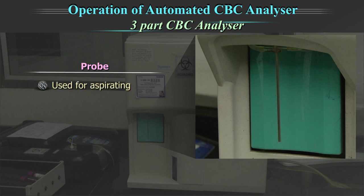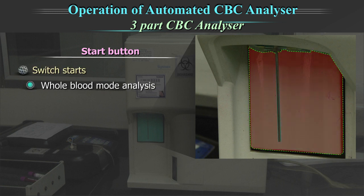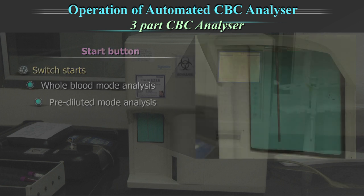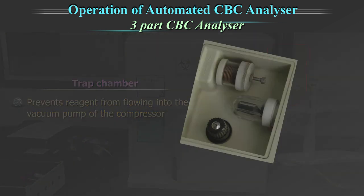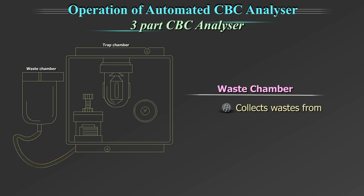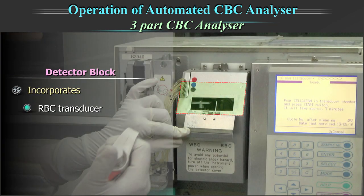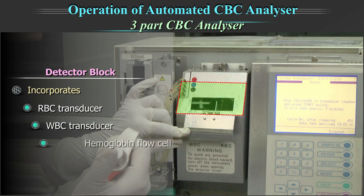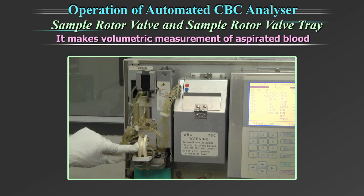The probe is used for aspirating the sample, the quality control material, or for maintenance purposes. The start button starts both the whole blood mode analysis and the pre-diluted mode analysis. The trap chamber prevents reagents from flowing into the vacuum pump of the compressor when an error occurs. The waste chamber collects waste from the transducers and mixing chambers. The detector block incorporates the RBC transducer, the WBC transducer and the hemoglobin flow cell. The sample rotor valve makes volumetric measurements of aspirated blood.